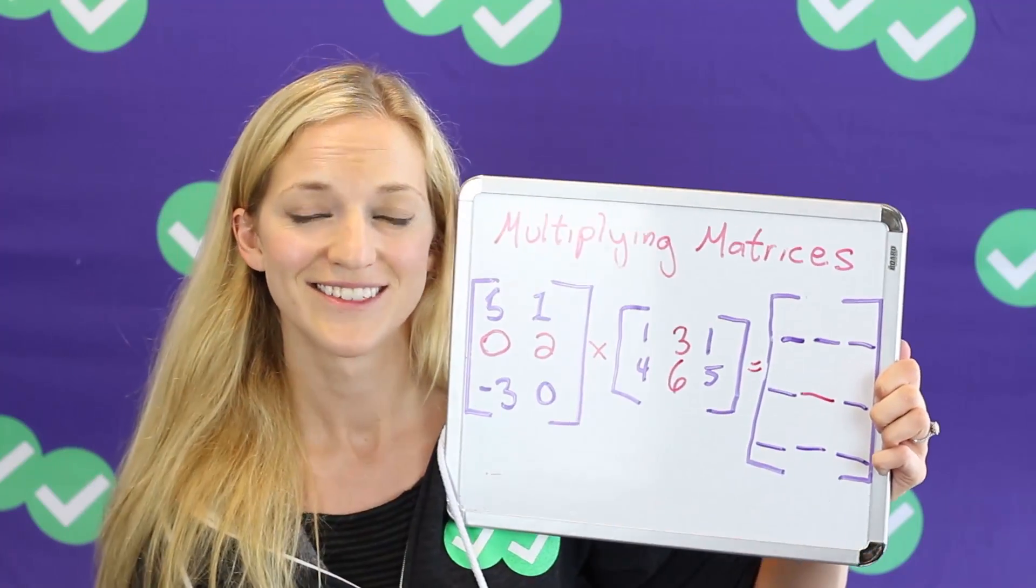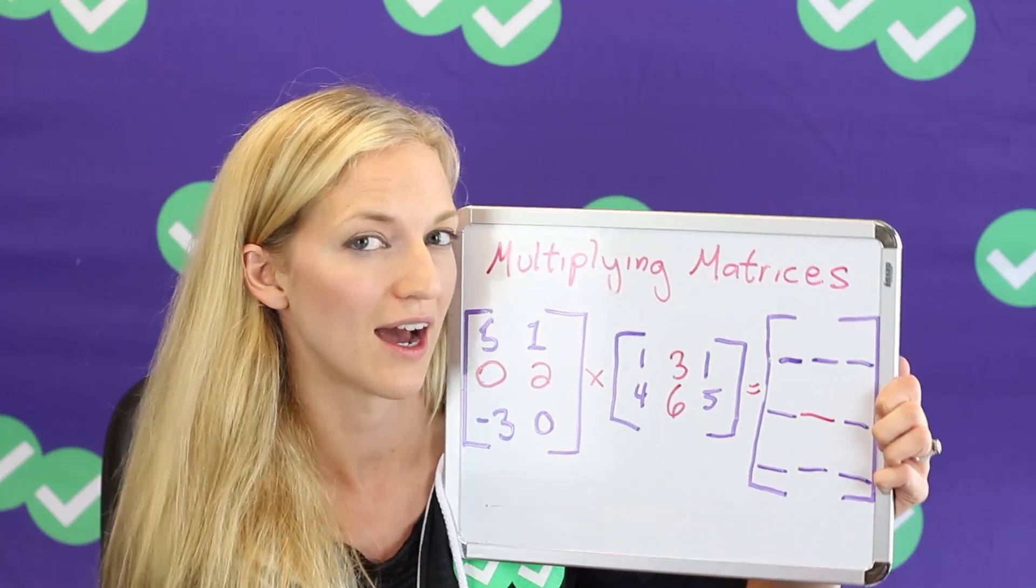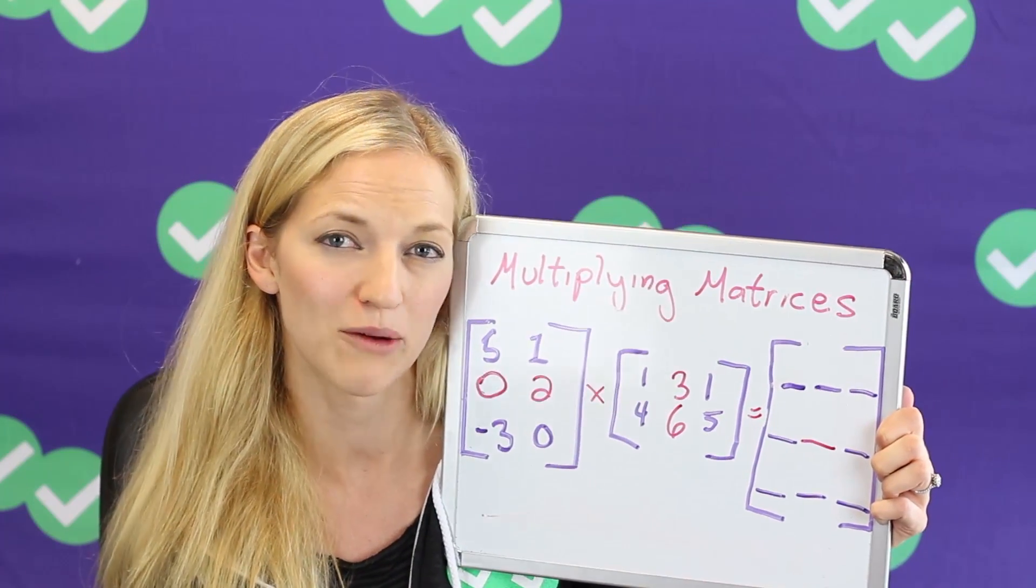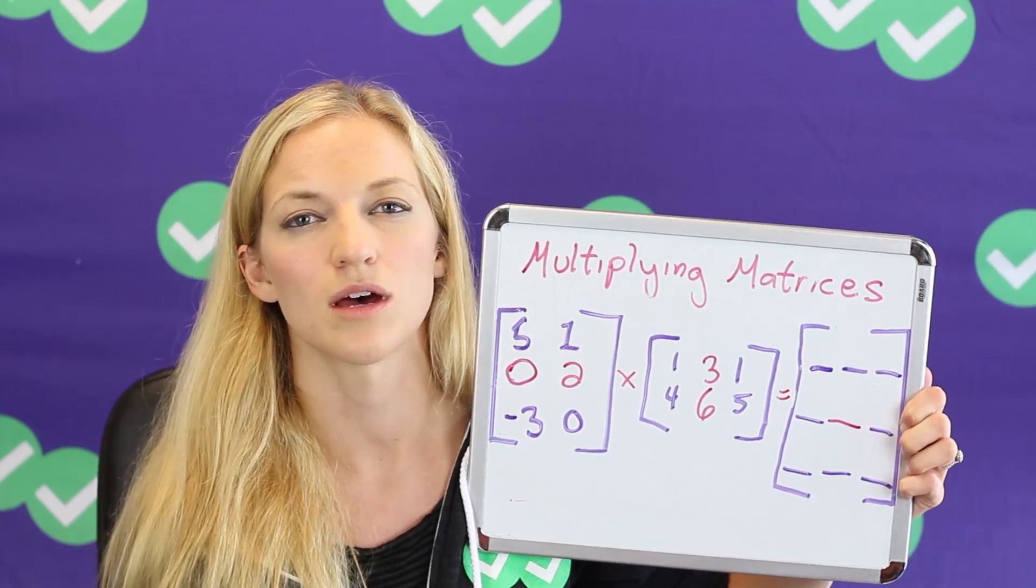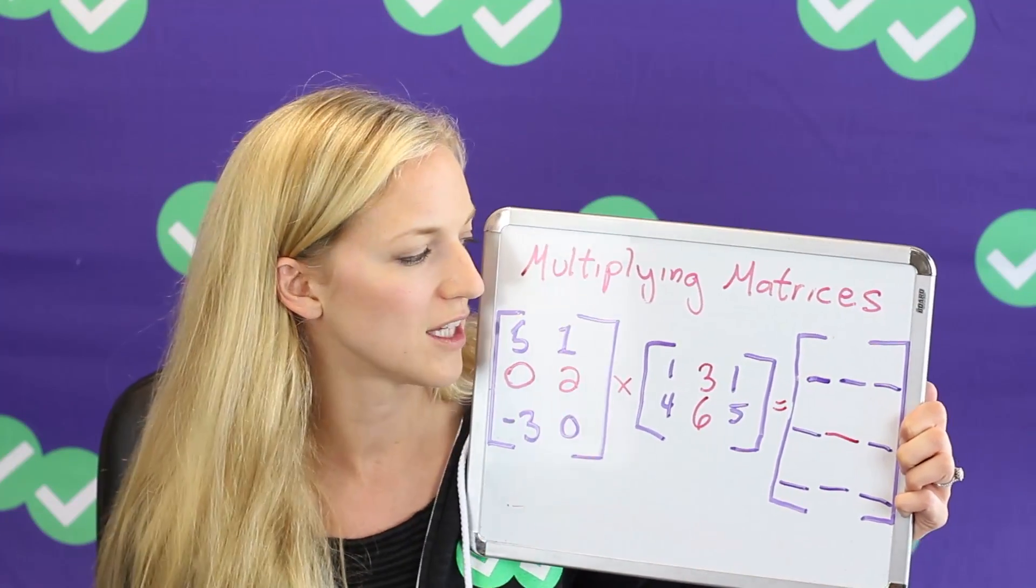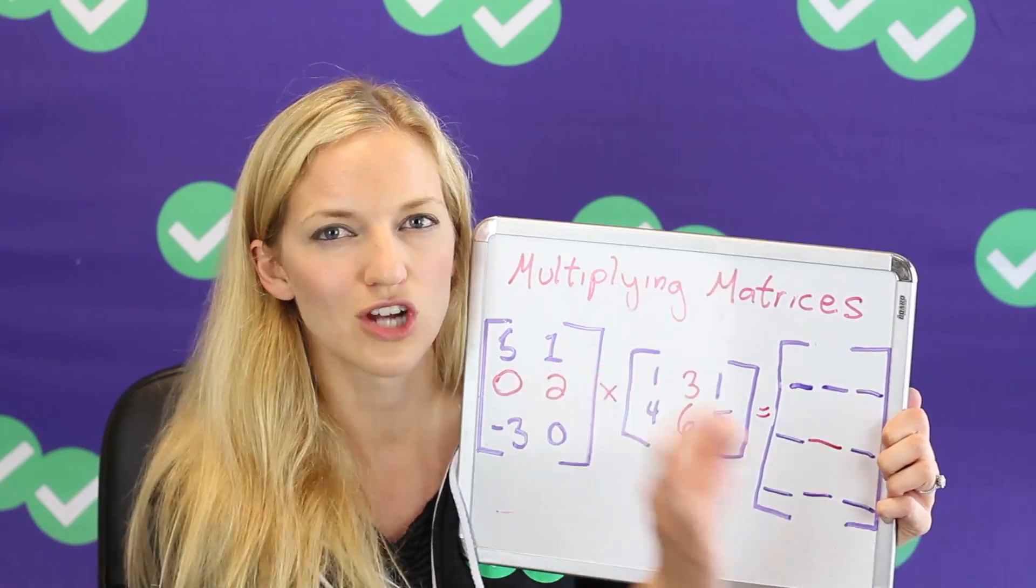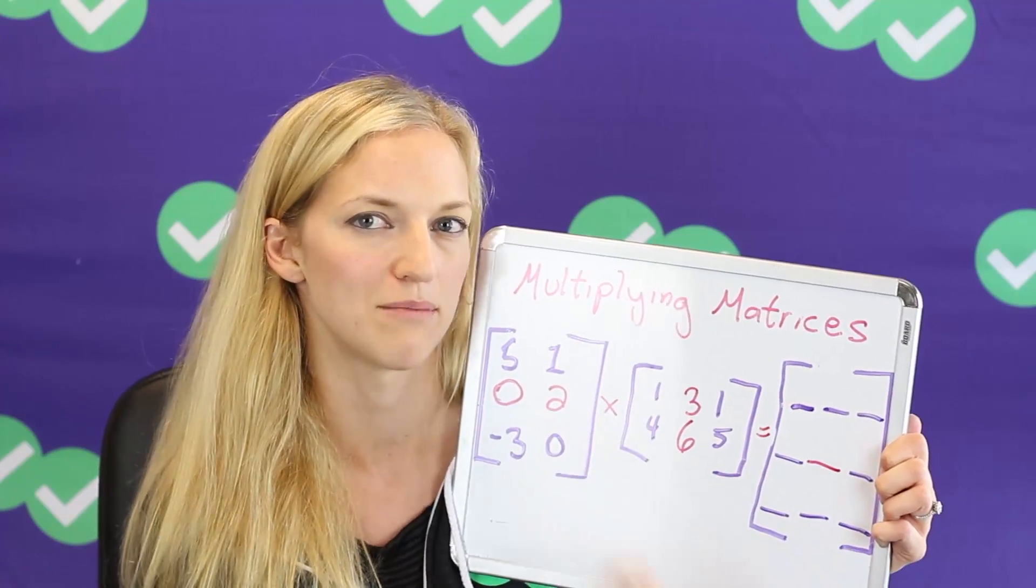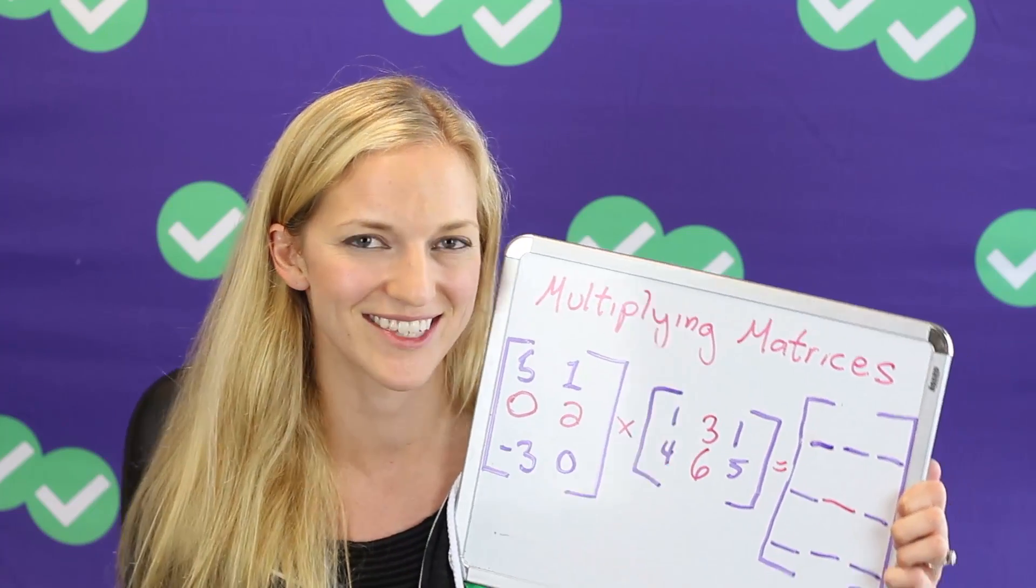Now, don't worry. The ACT is not going to give you anything this complex. They're not going to ask you to fill out this entire matrix. Because in order to do that, we'd have to do a lot of calculations. So what they're going to do is give you something smaller, a matrix with a lot of zeros, or they're just going to ask you to find just one point in that matrix. But if you know all the rules, you're going to be able to do whatever the ACT throws at you. Piece of cake.